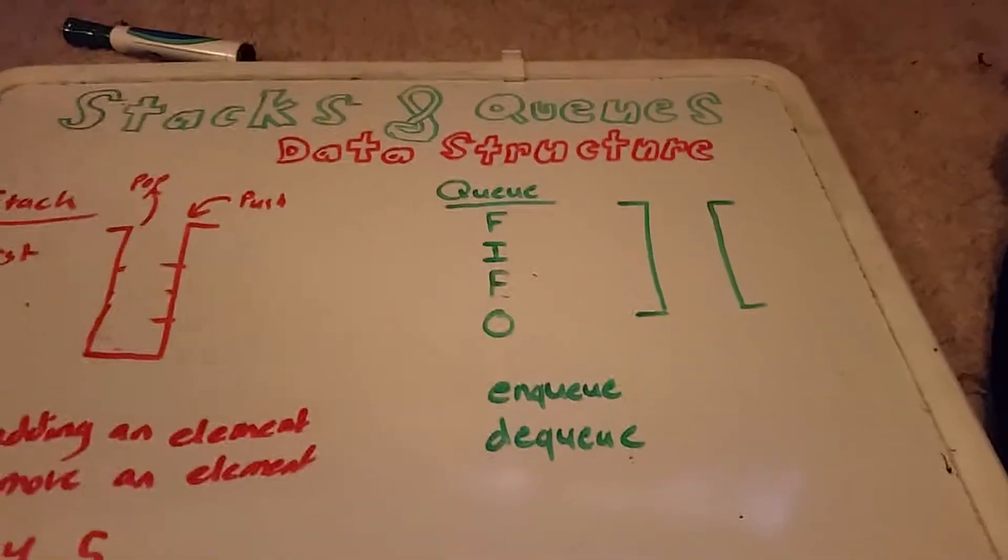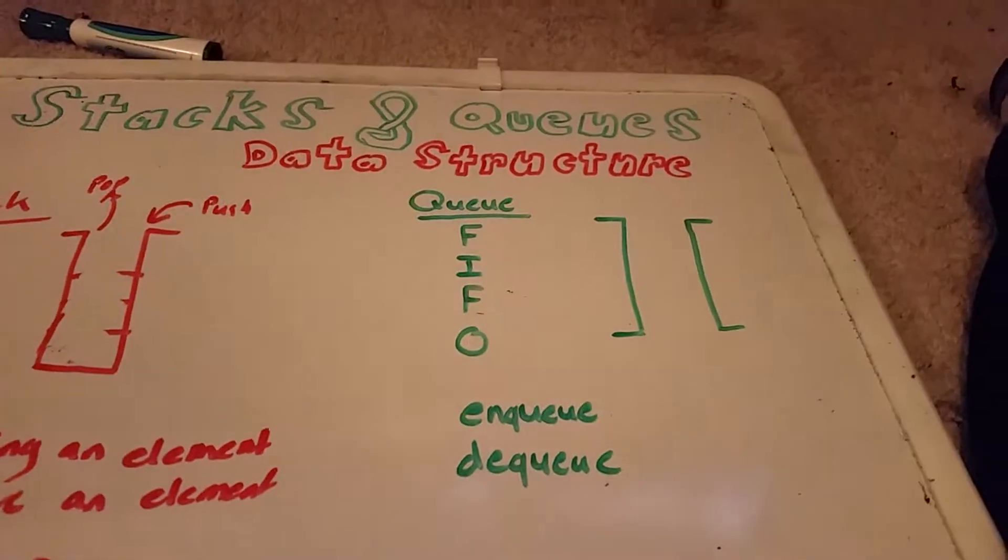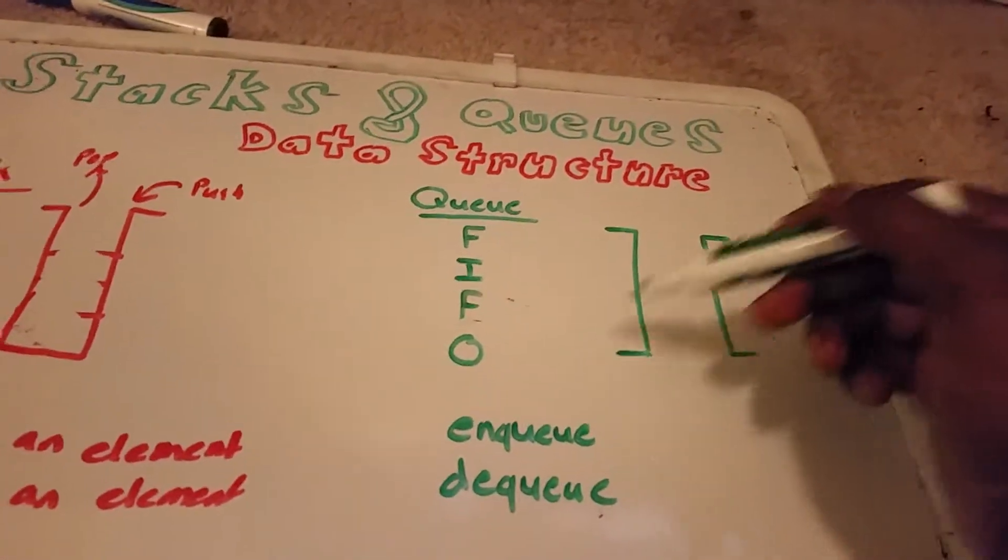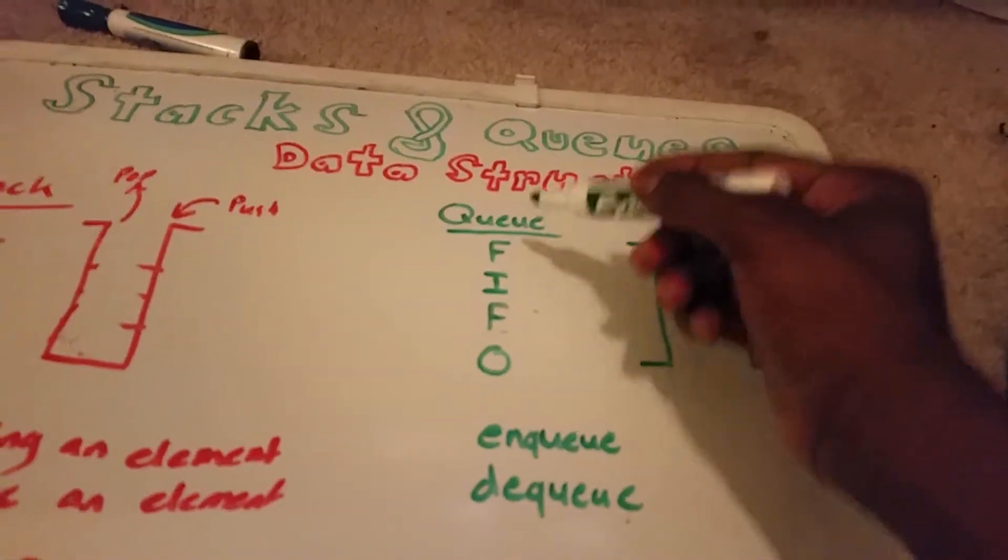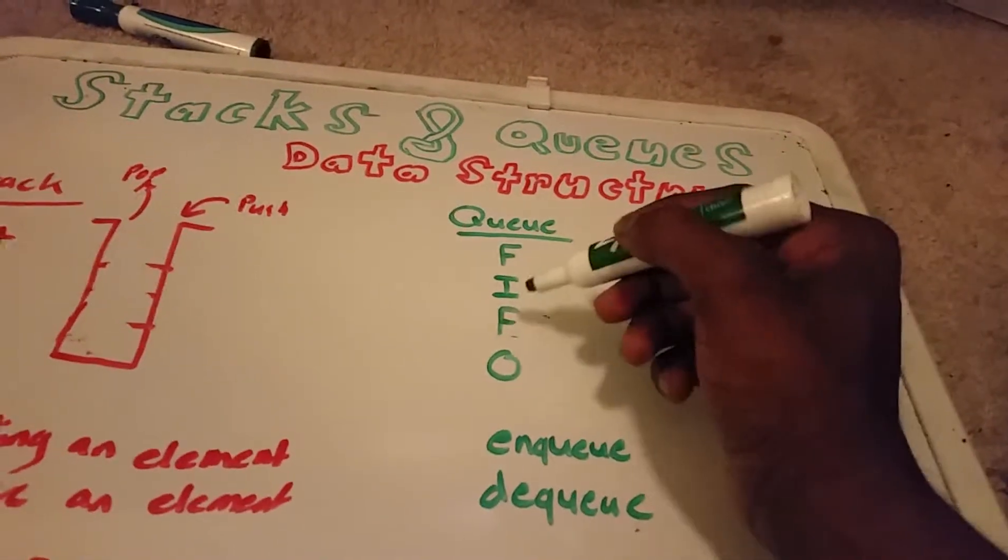And now on our right we have the queue data structure. And it's represented like this. And we have this acronym FIFO, FIFO,